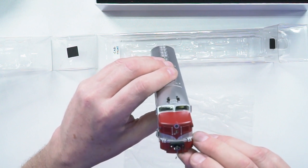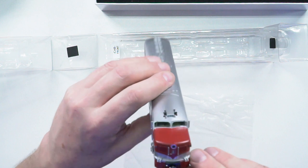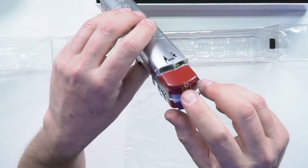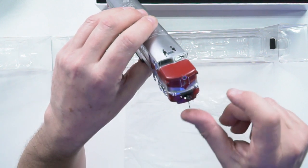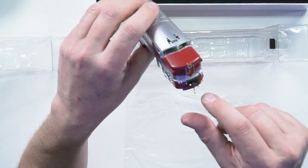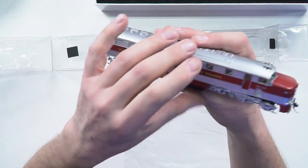And you've got some nice added on detail. You've got little door handle, you've got handrails, MU sockets. We have air hoses on the side.